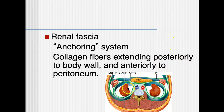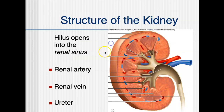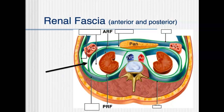In this diagram, here are the kidneys, and all this is renal fascia — collagen fibers extending outward. When it's posterior, they go to the body wall; when it's anterior, they go towards the peritoneum. Enlarged, you can see the renal fascia on one side connecting to the peritoneum, and on the other side connecting back to the posterior lining of the abdomen.